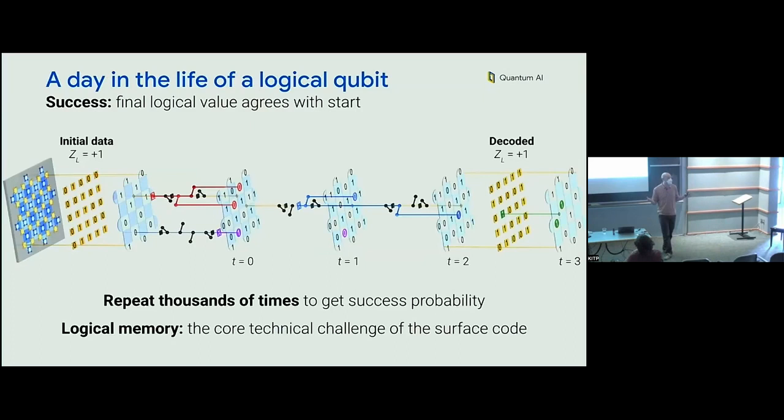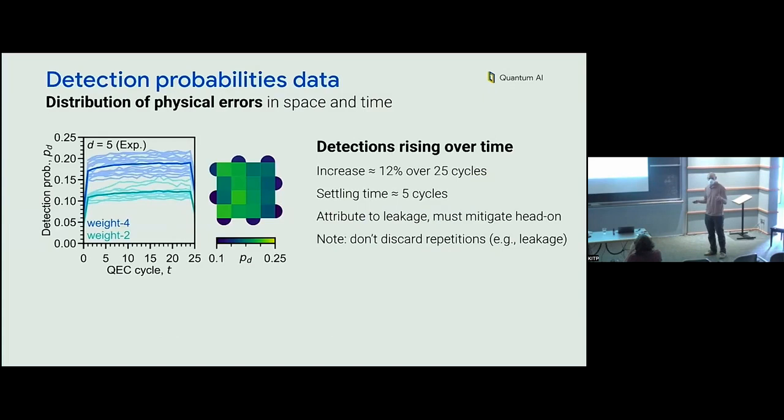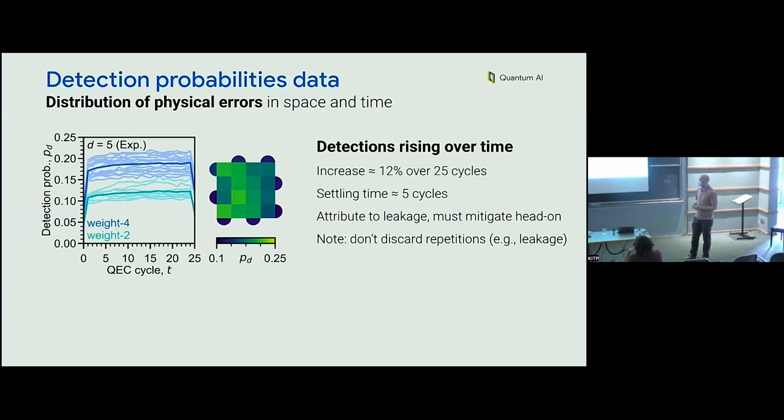We're going to get into data now, so if there are any big picture questions, it's a good moment. We did this in real life and before we get into all the logical stuff, we want to look at the detection probabilities — a simpler form of data showing where in space and time errors are tending to happen in the course of our experiment.